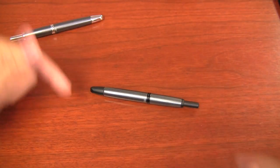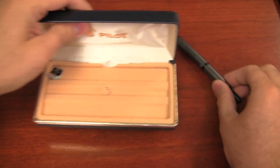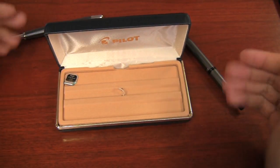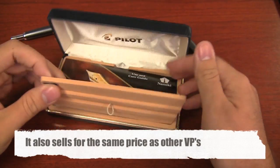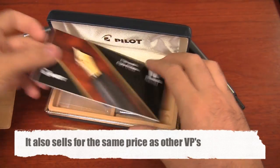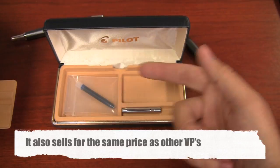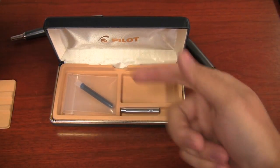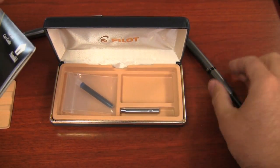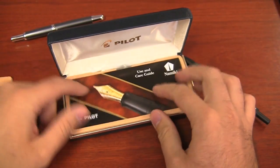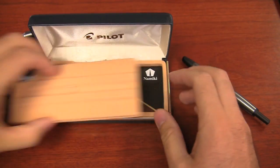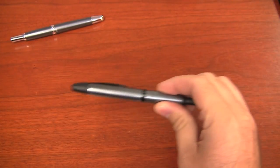This pen comes in this box, which is your standard Pilot Vanishing Point box. It comes with your typical Pilot goodies. It comes with a Pilot Namiki cartridge, a metal cartridge cap that you put over the cartridge if you're going to use it in the Vanishing Point here, and your instructions use guide and all that stuff. So, but anyway, this is the pen.